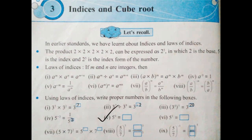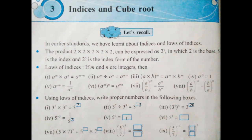Next: 5 raised to 0 is equal to box. The formula is A raised to 0 is equal to 1. That means any number raised to 0 is 1, so 5 raised to 0 is equal to 1. Next: 5 raised to 1 means 5. If you have the index 1 of any number, then the answer will be the same number.